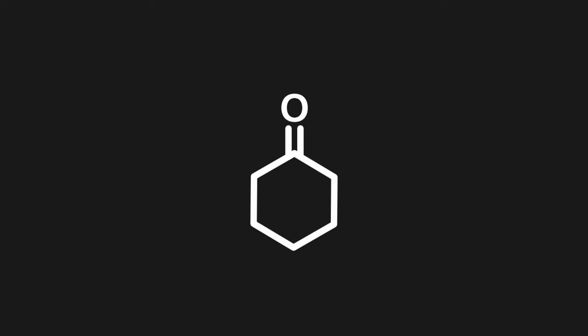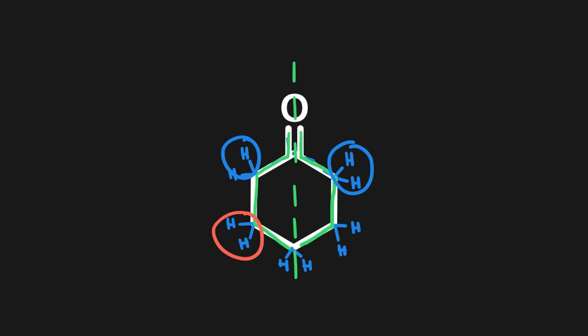We will first identify where hydrogens are present on cyclohexanone by counting the number of bonds each carbon has. Since carbon wants to have four bonds in total, any bonds not shown represent hydrogen bonds. The carbonyl carbon already has four bonds — two to oxygen and two to the adjacent carbon atoms — so it doesn't have any hydrogens. Moving clockwise, the next carbon only has two bonds, one to each adjacent carbon atom, and therefore will have two hydrogens attached to it. The remainder of the carbons in the molecule also have two hydrogens each. Now that we know where hydrogen atoms are, let's draw our vertical symmetry line. This molecule is mirrored across this line, so the hydrogens mirrored on either side will be identical.